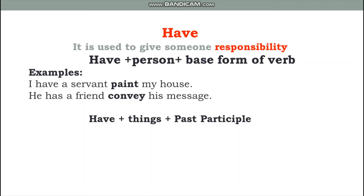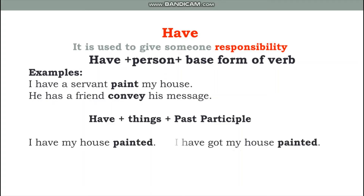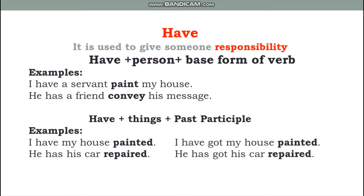Examples of 'have' with a thing: 'I have my house painted' — 'painted' is the past participle. 'He has his car repaired.' We can also add 'got': 'He has got his car repaired.'